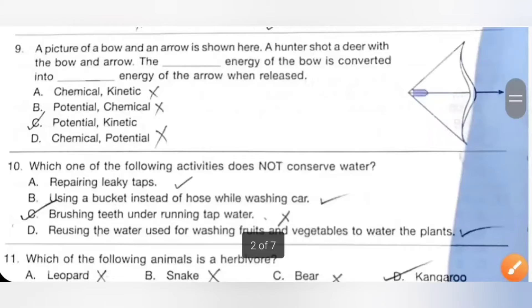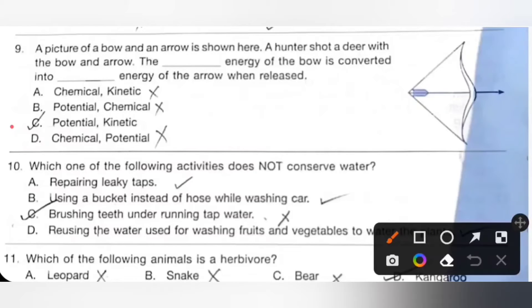Ninth one: A picture of a bow and arrow is shown here. A hunter shot a deer with the bow and arrow. The potential energy of the bow is converted into kinetic energy of the arrow when released. Option C, potential kinetic is the correct answer.